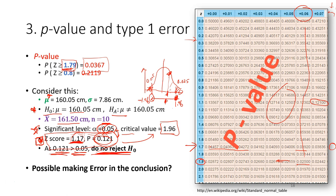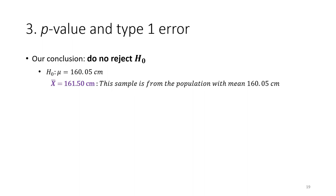However, it is still possible to make an error in this conclusion. We have set the hypothesis, the criteria, and the significance level, and compared the calculated statistic with the critical value or p-value with alpha. But errors are still possible. In this case our conclusion is to not reject the null hypothesis: H₀ states the mean equals 160.5 cm, and this sample is from a population with mean 160.5 cm.